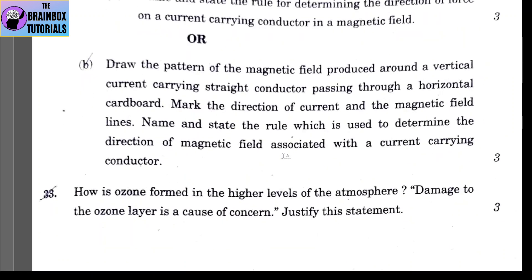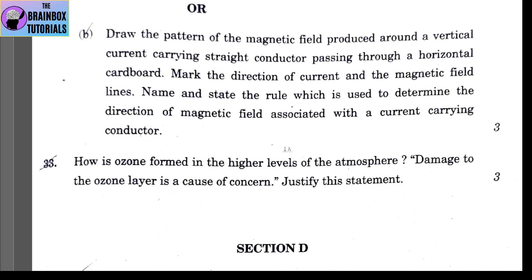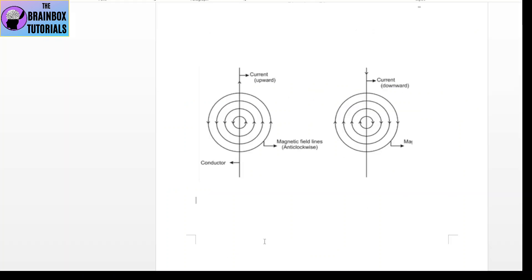Part B: draw the pattern of the magnetic field produced around a vertical current-carrying straight conductor passing through a horizontal cardboard. Mark the direction of current and field lines. The rule used is the Right-Hand Thumb Rule. If current is upward, the magnetic field lines are anticlockwise; if current is downward, the field lines are clockwise. Either or both diagrams can be drawn.